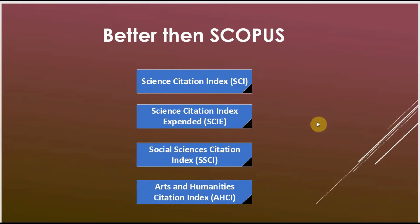One more important thing: a journal can be indexed in Scopus, Web of Science, and UGC together. We cannot say it belongs to only one index. Sometimes it happens that a journal is in only Scopus or only Web of Science, but most of the time a journal that belongs to Scopus also belongs to Web of Science — though the category may differ, whether SCI, SCIE, or others. If you find a journal that is not in Web of Science but is in Scopus, that is acceptable. But sometimes a journal is listed in Web of Science and not in Scopus — that is very rare.